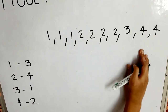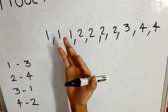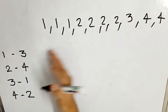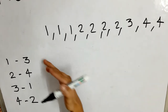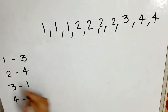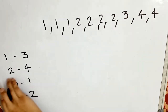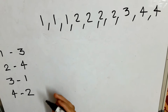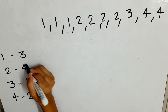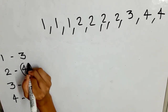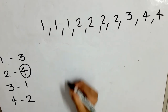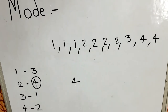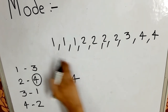To find the mode, first arrange the numbers in ascending order. This makes it easier to find the frequency of each number — frequency means how many times it occurred. Here, 1 occurred 3 times, 2 occurred 4 times, 3 occurred 1 time, and 4 occurred 2 times. The largest frequency here is 4, so 2 is our mode. This was how to find the mode of smaller data.